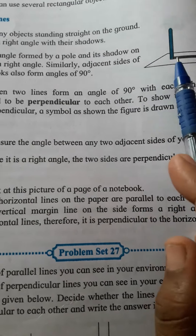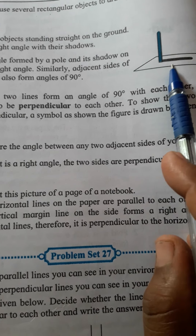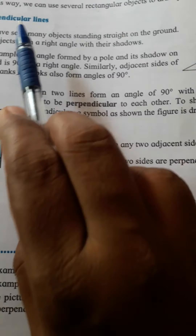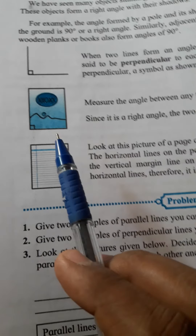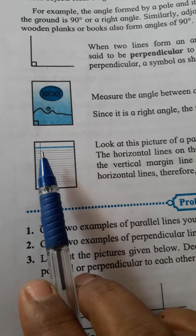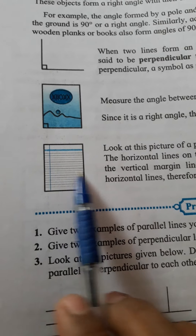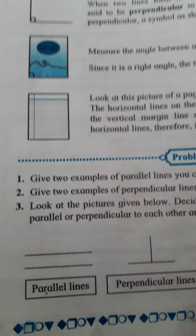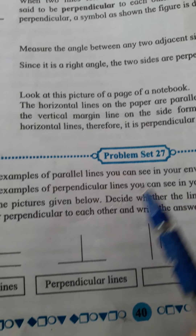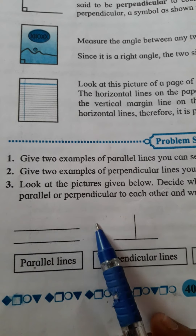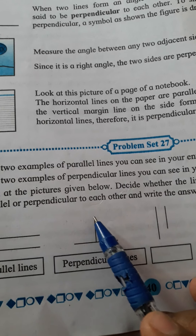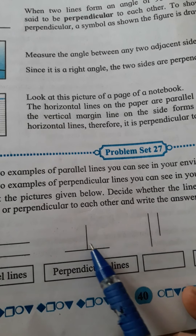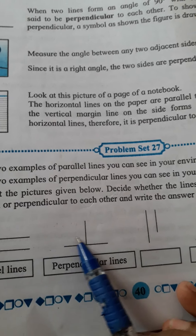Next: obtuse angle. An angle which measures more than a right angle is called an obtuse angle. For example, angle LMN or angle NML, which is greater than 90 degrees. This much is 90, and more than 90 — that type of angle we call an obtuse angle. These are the types of angles.